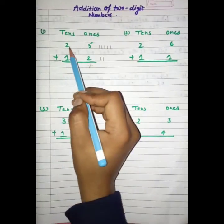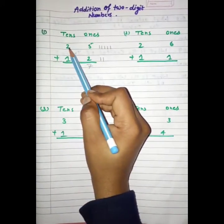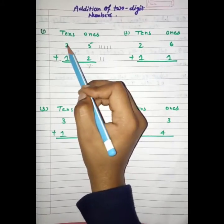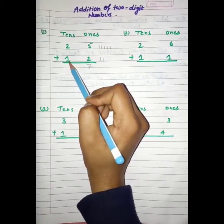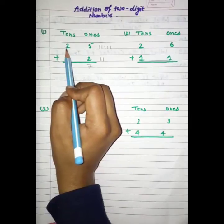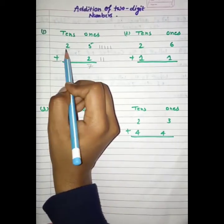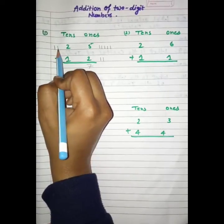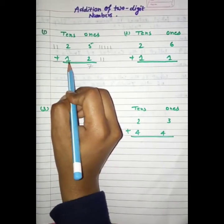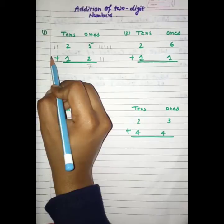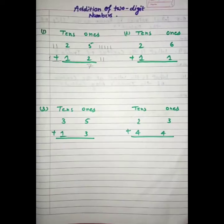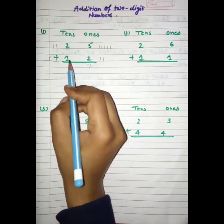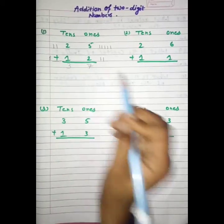Similarly, now we will add 2 and 1. Yeh kaun sa number hai? 2. To hum 2 lines draw karen ge. And yeh kaun sa number hai? 1. So, we will draw 1 line. And then count the lines: 1, 2, 3. So, students, we have 3.